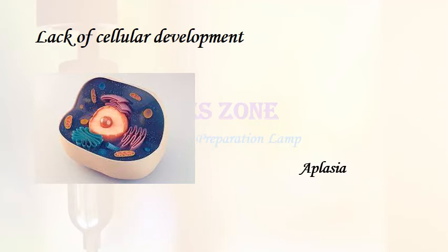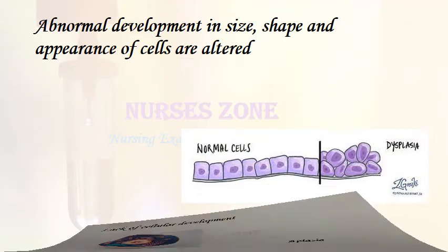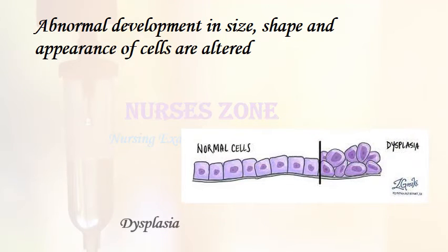Lack of cellular development: aplasia. Abnormal development in which the size, shape, and appearance of cells are altered: dysplasia.